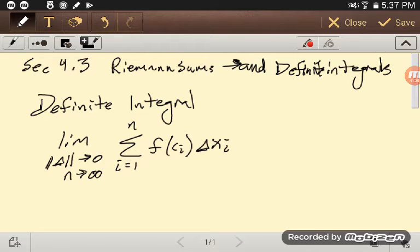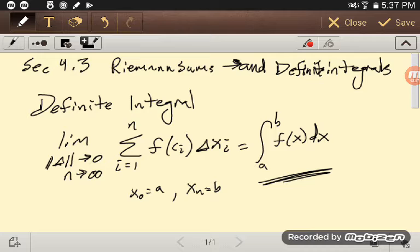So if that limit exists and so forth, then we shorten this notation a bit. Now that looks like our integral sign, and we have our f of x and dx, and then we say from a to b. And of course that was where we had x0 was a, and xn is always b, no matter what n is. And that is our notation for a definite integral.